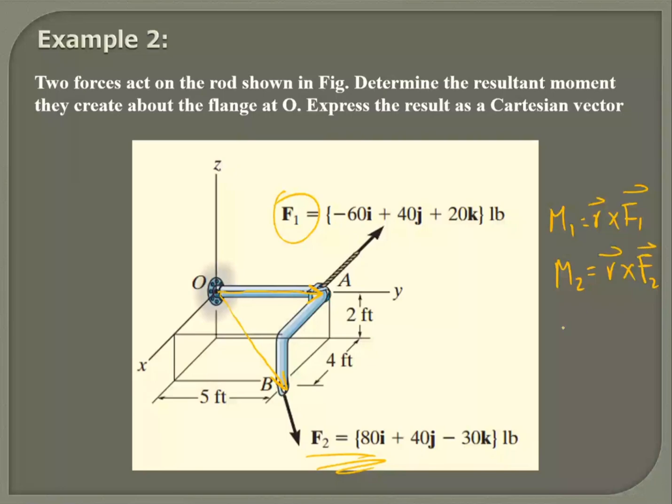Then you do M naught equals to M1 plus M2. Come on, solve this for me.